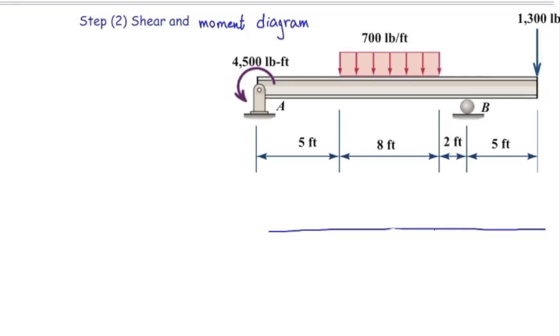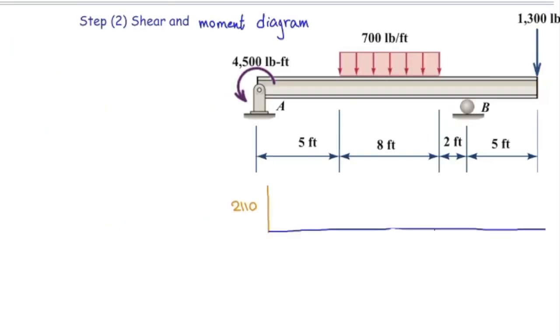Yes, there should be, because there is a reaction force. So, reaction force at that point is 2,110 upwards, so that would be positive 2,110. The shear diagram remains constant from A to the beginning of that distributed load, like this.